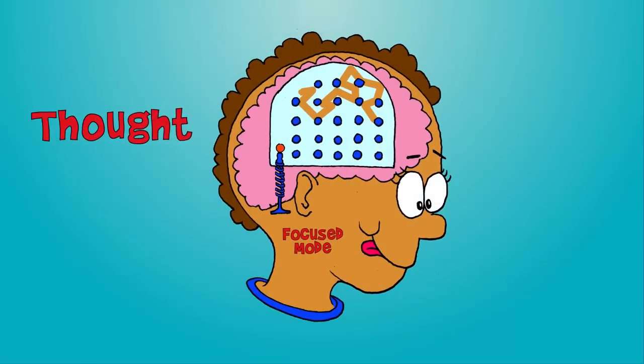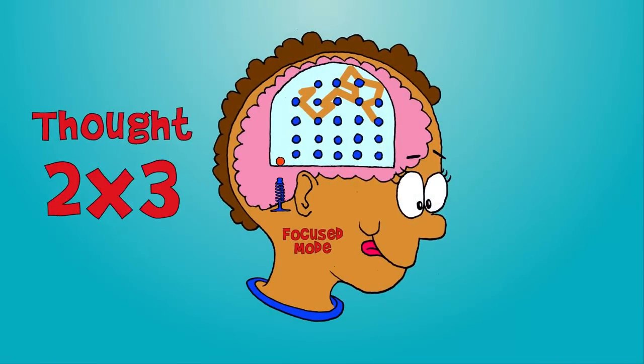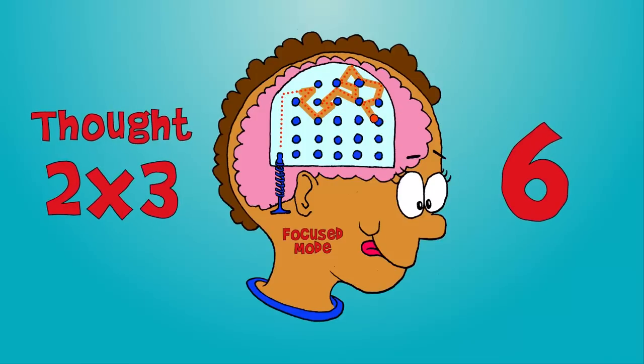The ball is like a thought. You think a thought, like, I want to multiply two times three. The thought takes off, moving smoothly along. As it's bouncing around in the bumpers, you're able to solve a simple, familiar problem.